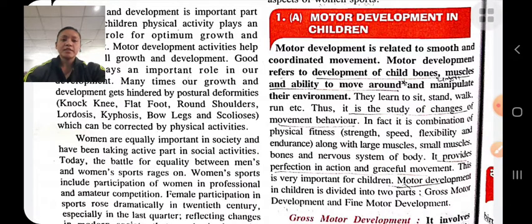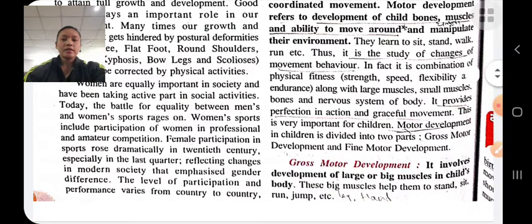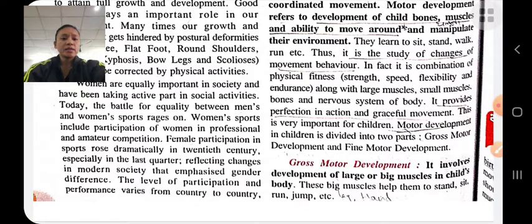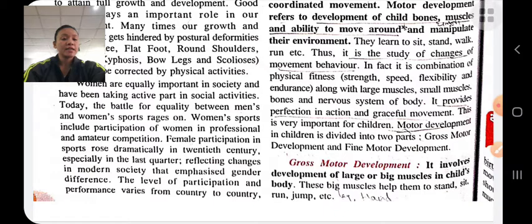Motor development in children is divided into two parts: gross motor development and fine motor development. Gross motor development means development of big or large muscles, like muscles of the hand and leg. The development of big muscles helps the child to do big activities like running, walking, jumping, standing, and sitting.